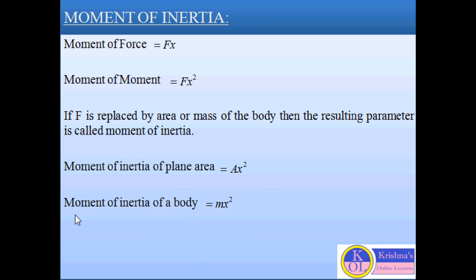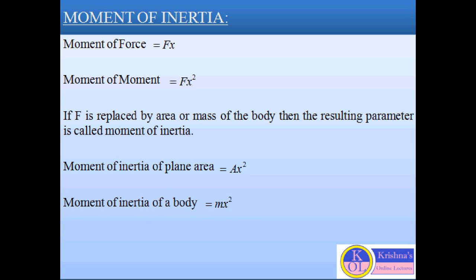If we replace F with the mass of the body, then the moment of inertia of the body will be MX square. Inertia is basically a property of a body where the body resists any change in its state of rest or in uniform motion.